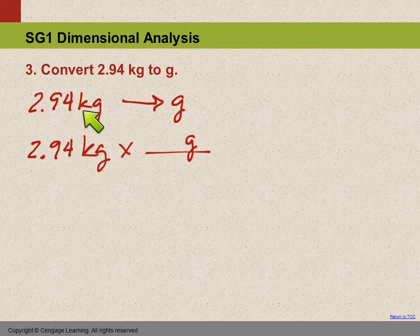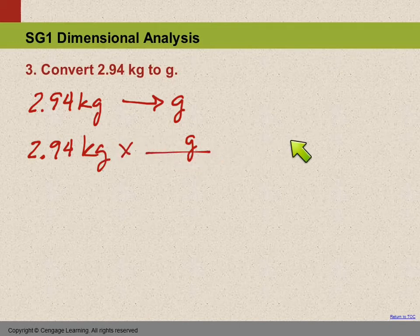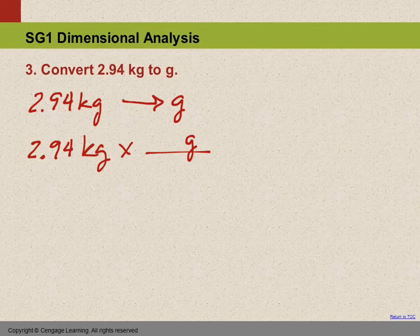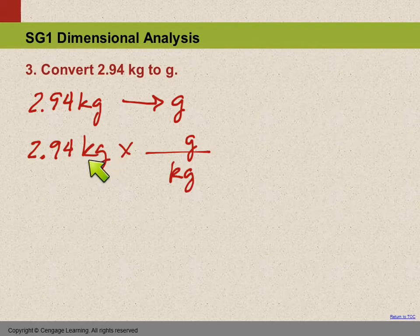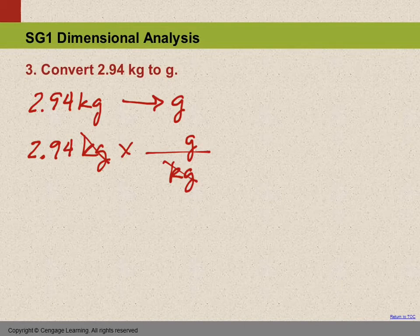What we wrote here in our path is what we write on the top of all these fractions. Here there's only one, but it's kilograms to grams. Then in the denominator, we put the unit that was over here. So kilograms comes down here because we want them to go away—they cancel out.